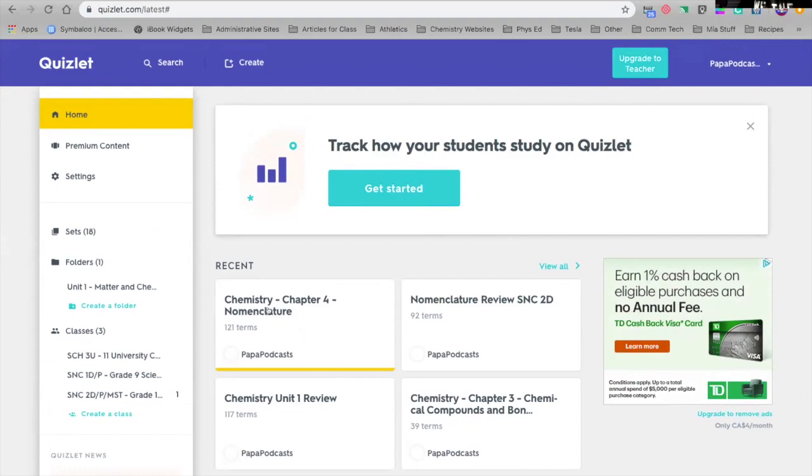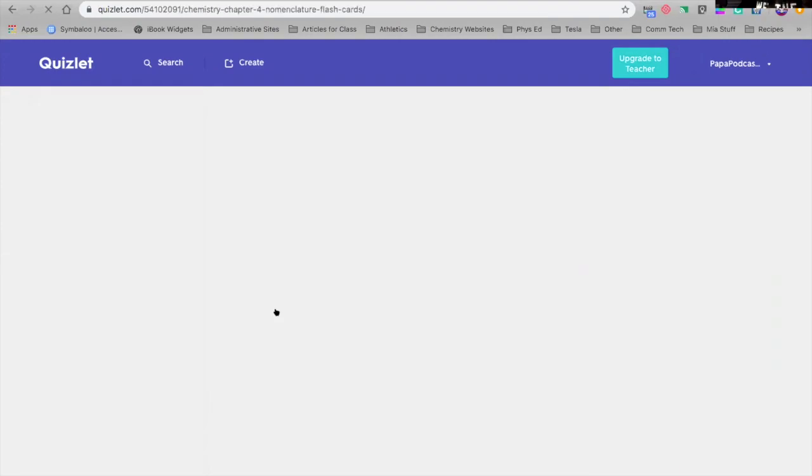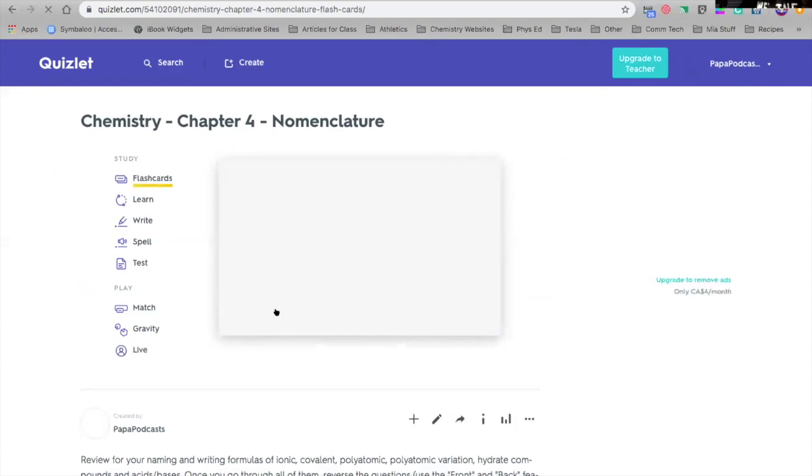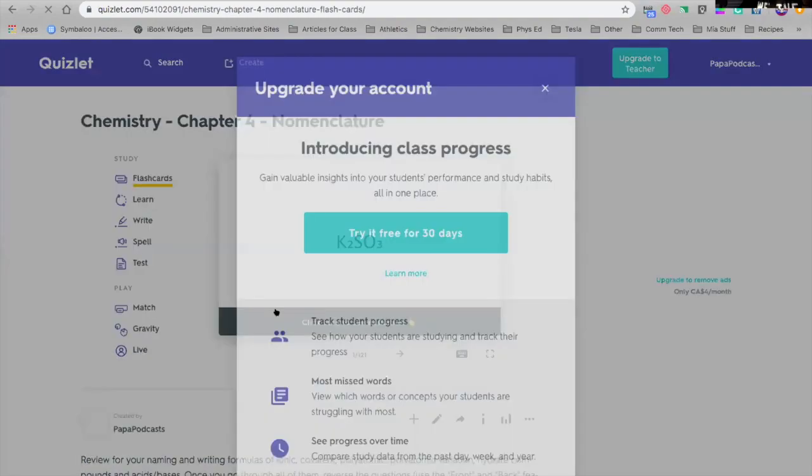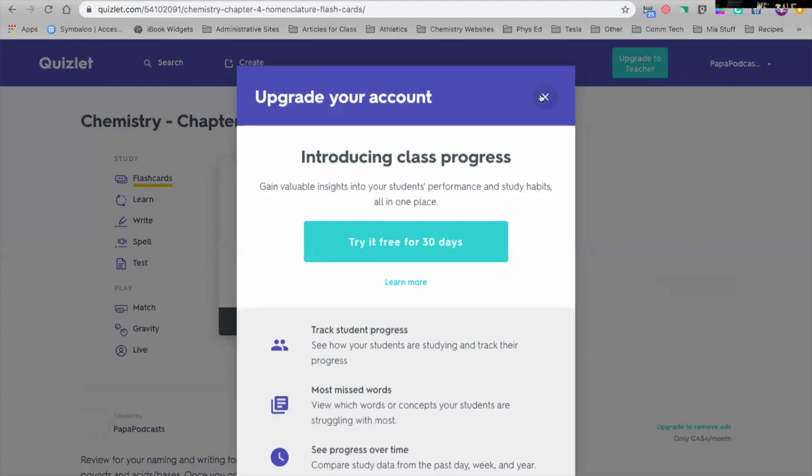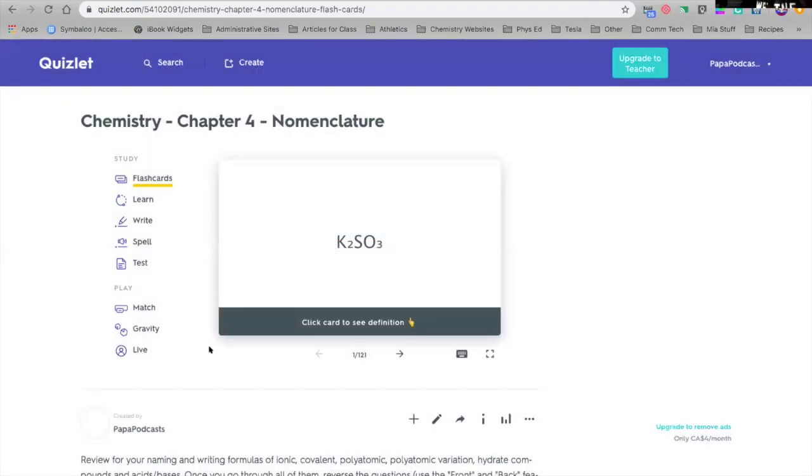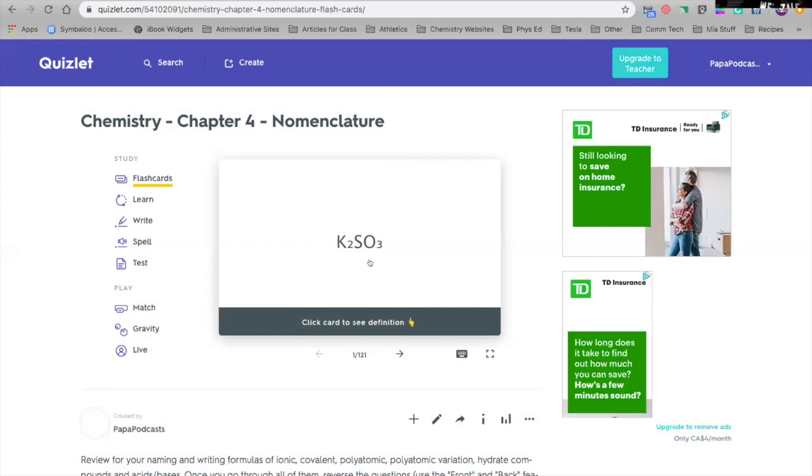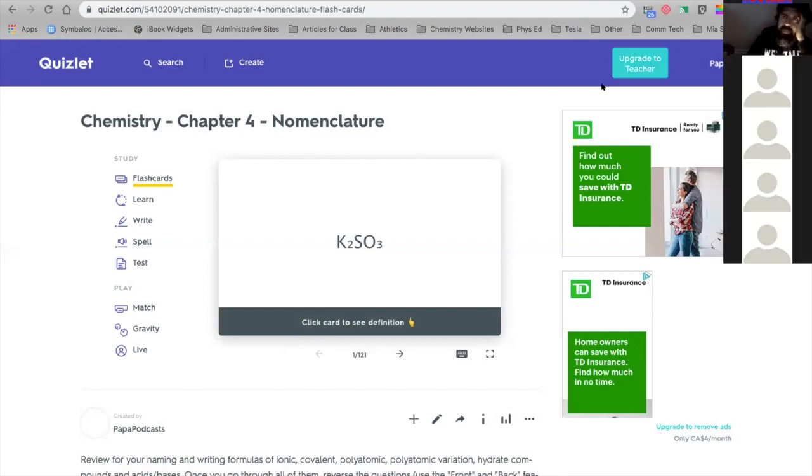So the one I want to point out is here, Chemistry Chapter 4 Nomenclature. There's 121 terms, so there's 121 flashcards. And so you'll see on the flashcards for this one, the name, or you'll see a formula.